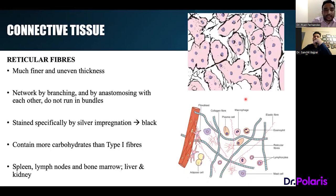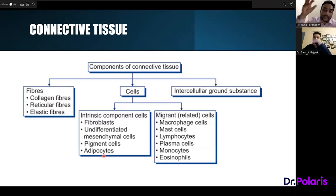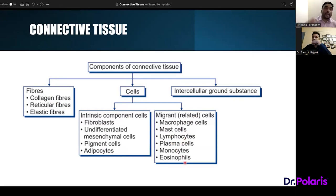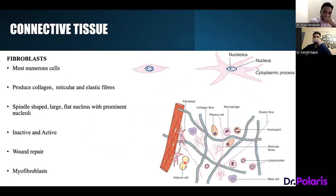Each elastic fiber has an amorphous core of elastin — shapeless and characterless at the center — surrounded by multiple hair-like microfilaments called fibrillin, which are made of glycoprotein. Now we move on to the second component of connective tissue: cells. Resident cells include fibroblasts, undifferentiated mesenchymal cells, pigment cells, and adipocytes. Migrant cells include macrophages, mast cells, lymphocytes, plasma cells, monocytes, and eosinophils.